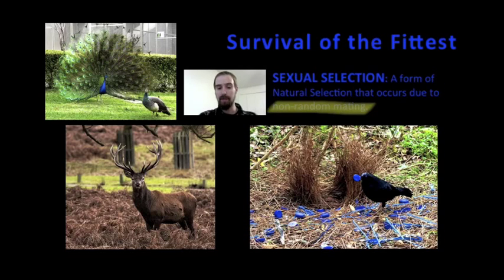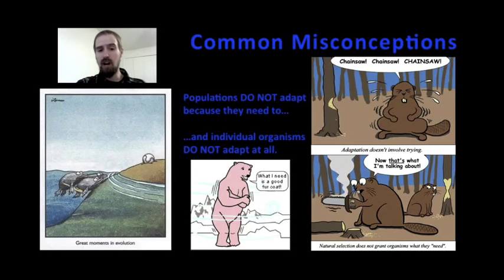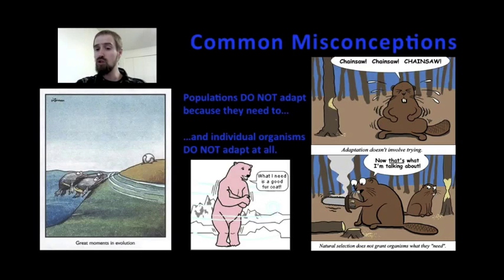Females choose their mates. Mating between individuals is not based on simply random chance. To evolve is to adapt to the changing environment. Populations adapt over generations due to natural selection, but individuals do not evolve, so individuals do not adapt. Individuals do respond to their environment, but they do not adapt to it according to our scientific definition of the word.